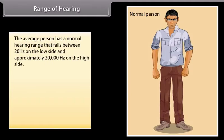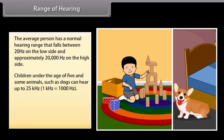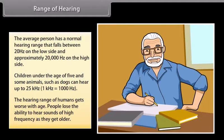Range of hearing. The average person has a normal hearing range that falls between 20 hertz on the low side and approximately 20,000 hertz on the high side. Children under the age of five and some animals such as dogs can hear up to 20 kilohertz. The hearing range of humans gets worse with age. People lose the ability to hear sounds of high frequency as they grow older.